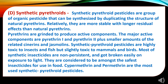The fourth group is synthetic pyrethroids. Synthetic pyrethroid pesticides are a group of organic pesticides synthesized by duplicating the structure of natural pyrethrins. They are relatively more stable with a longer residual effect than natural pyrethrins. Pyrethrins are derived from plants, and the major active components are pyrethrin 1 and pyrethrin 2, plus a smaller amount of related compounds. Synthetic pyrethroid pesticides are highly toxic to insects and fish but slightly toxic to mammals and birds. Most are non-persistent and break down easily on exposure to light. They are considered among the safest insecticides for use in food. Cypermethrin and pyrethrins are the most widely used synthetic pyrethroid pesticides.